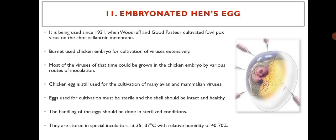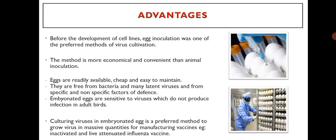Chicken egg is still used for the cultivation of many avian and mammalian viruses. Eggs used for cultivation must be sterile and shells should be intact and healthy. The handling of eggs should be done in sterilized conditions. They are stored in special incubators at 35 to 37 degrees Celsius with relative humidity of 40 to 70 percent. Before the development of cell lines, egg inoculation was one of the preferred methods of virus cultivation. The method is more economical and convenient than animal inoculation — eggs are readily available, cheap and easy to maintain, free from bacteria and many latent viruses, and from specific and non-specific factors of defense. Culturing viruses in embryonated egg is a preferred method to grow virus in massive quantities for manufacturing vaccines, for example, inactivated and live attenuated influenza vaccine.